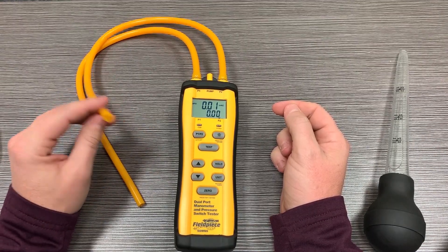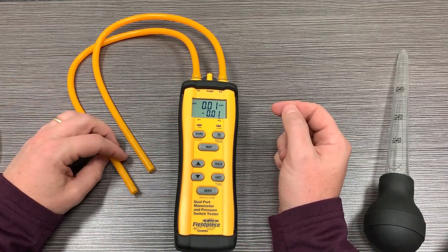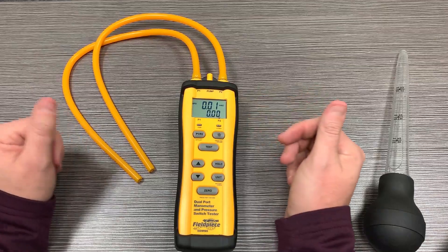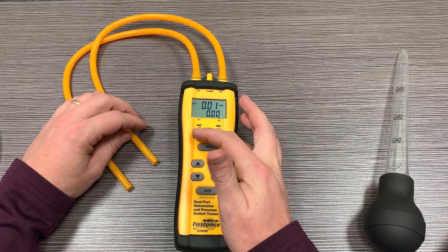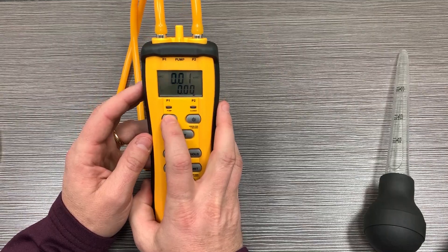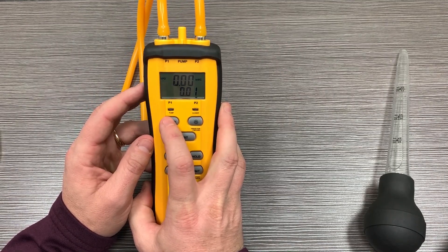So if I take one of them and put it in the return, and take the other and put it in the supply, that bottom number is going to represent the differential between both, whereas I'm going to see the individual ones as I toggle back and forth between P1 and P2.